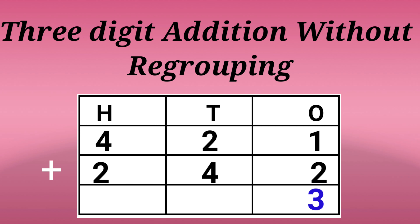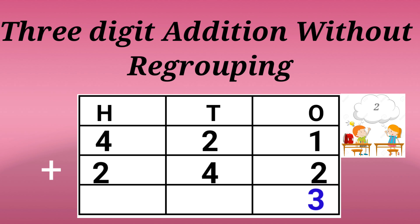Now we add the tens space. 2 plus 4. 2 in the mind and 4 in the fingers. 2 after 3, 4, 5, 6. So the answer is 6.